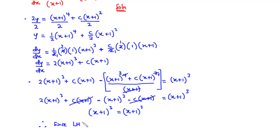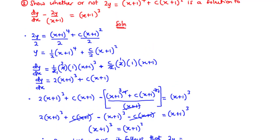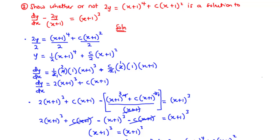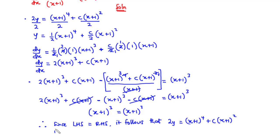Since the left-hand side equals the right-hand side, it follows that 2y = (x+1)⁴ + c·(x+1)² is a solution to the differential equation dy/dx − 2y/(x+1) = (x+1)³.